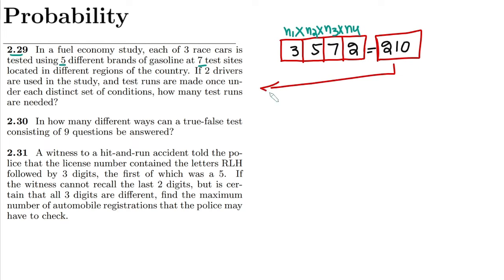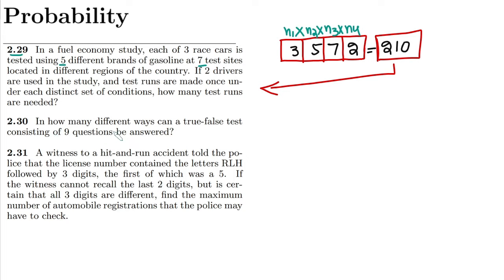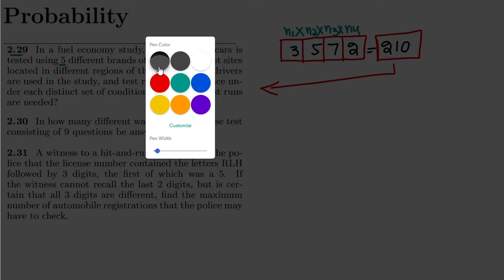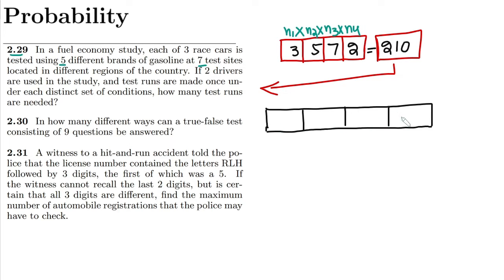Similarly, question 2.30 asks: in how many ways can a true/false test consisting of nine questions be answered? Here we have nine questions, each based on true or false. Let me draw a box containing nine slots — one slot for each question.